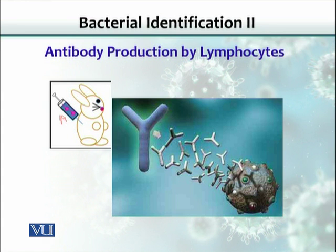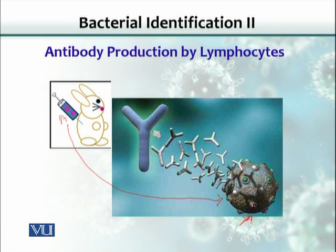Similarly, we combine an antigen with the antibody and see visible clumping, and we can use this method for microbial identification. In the body there are lymphocytes. When they see the antigen that we injected, the antigen would ultimately reach these cells, and these cells would be stimulated and start making antibodies.